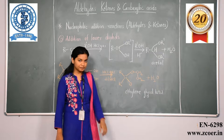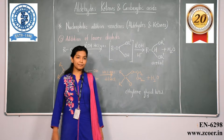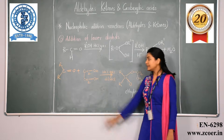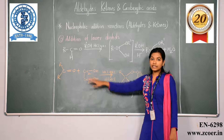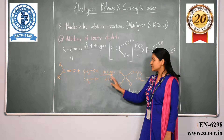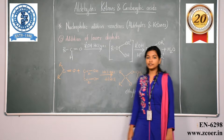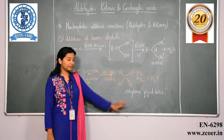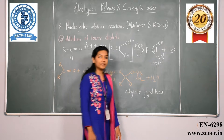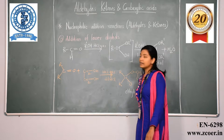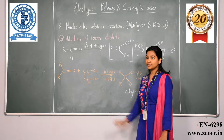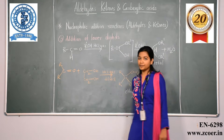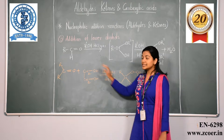For example, if we consider the aldehyde or ketone group reacting with ethyl alcohol in the presence of hydrochloric acid, we get the formation of an ethylene glycol ketal. Because of the +I effect of the alkyl group, the alkyl group becomes bulky.